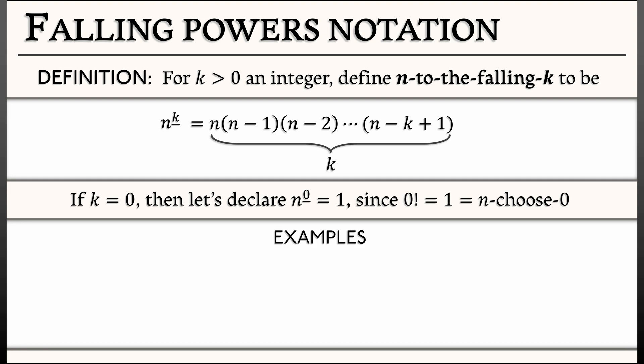Let's look at a few examples of sequences defined using falling powers. For example, if we look at the sequence n to the falling 2, what is that? Well, that's 0 to the falling 2, 1 to the falling 2, 2 to the falling 2, and so on.